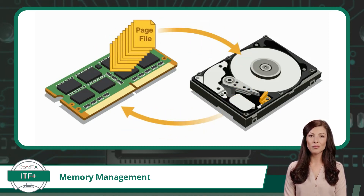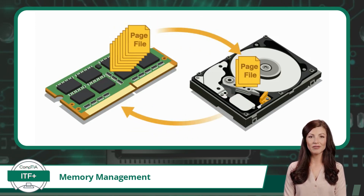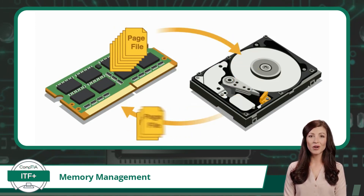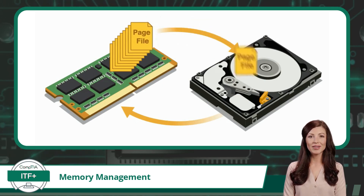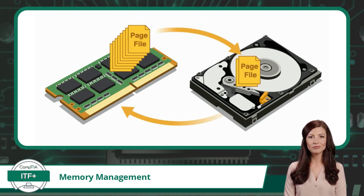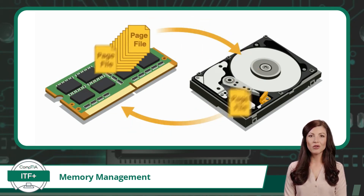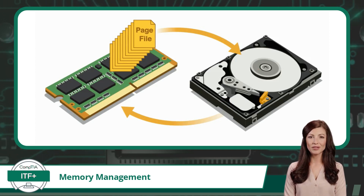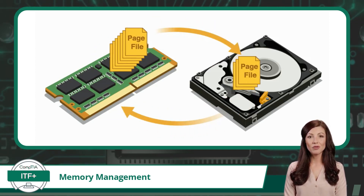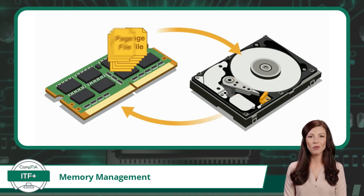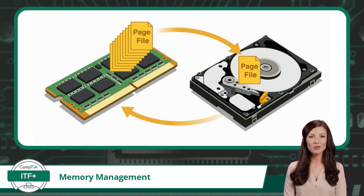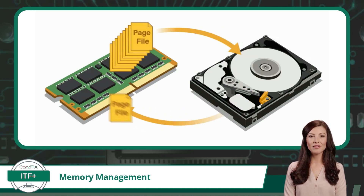While virtual memory enables the system to handle larger processes and multitasking effectively, using the page file on the hard drive is slower than accessing data directly from RAM, because drive access times are significantly slower compared to RAM access times. Excessive reliance on virtual memory due to insufficient physical RAM can lead to performance slowdowns, where the system spends more time swapping pages in and out of the page file than executing actual tasks.